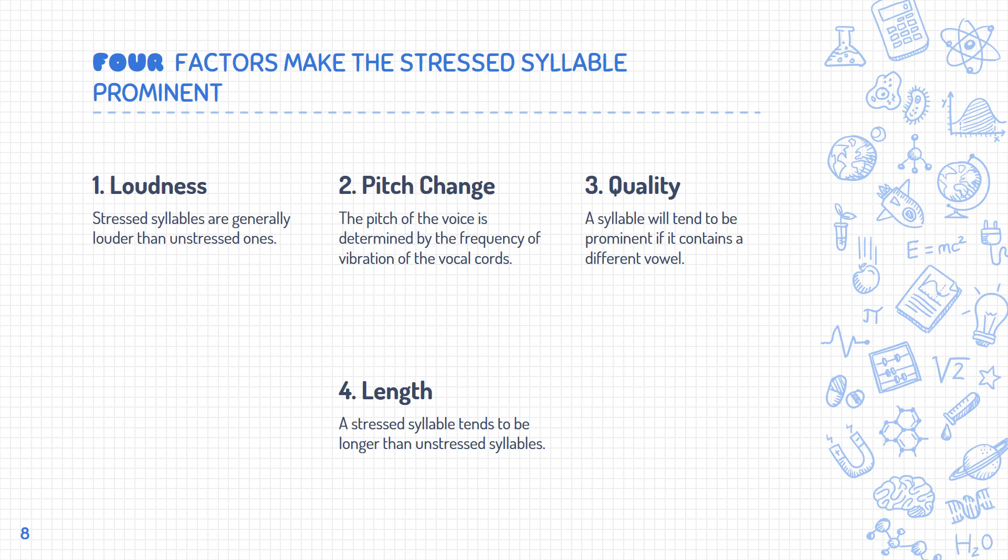There are four factors that make a stressed syllable prominent or stand out. The first is loudness. The second is pitch change. The third is quality — if one syllable has a different vowel than the others, it stands out. The last is length — longer syllables tend to be more stressed, and stressed syllables tend to be longer.